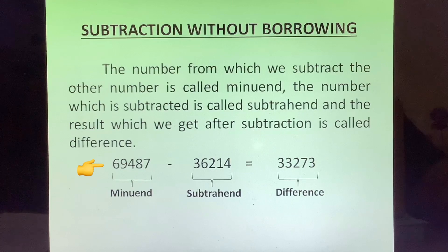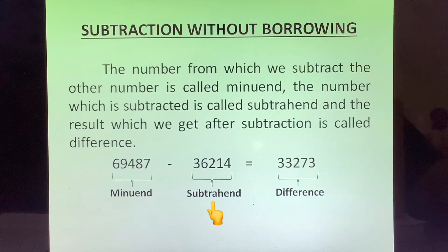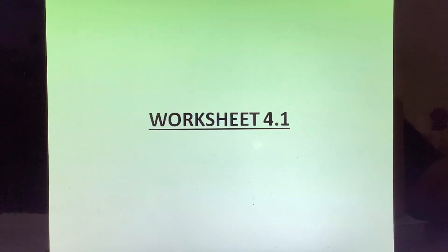This can be written in the number sentence form as 69487 minus 36214, which is equal to 33273. The first term is the minuend, second term is the subtrahend, and the last term, that is the answer of this subtraction, is called the difference. Now we are clear with the subtraction and the name of the terms. Let us move to the worksheet. You may pause the worksheet wherever you want, completely solve it, and then continue the video to see the answers.